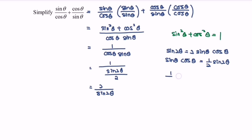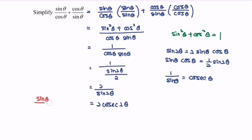Based on the trig ratio, 1 over sin θ equals csc θ. So we will have 2 multiplied with csc 2θ. Finally, sin θ over cos θ plus cos θ over sin θ equals 2 csc 2θ.